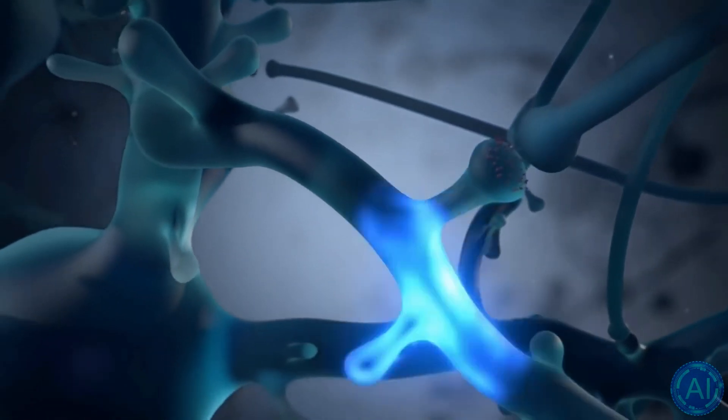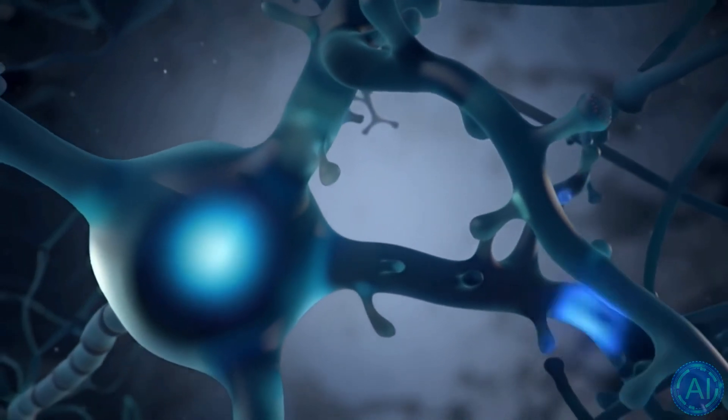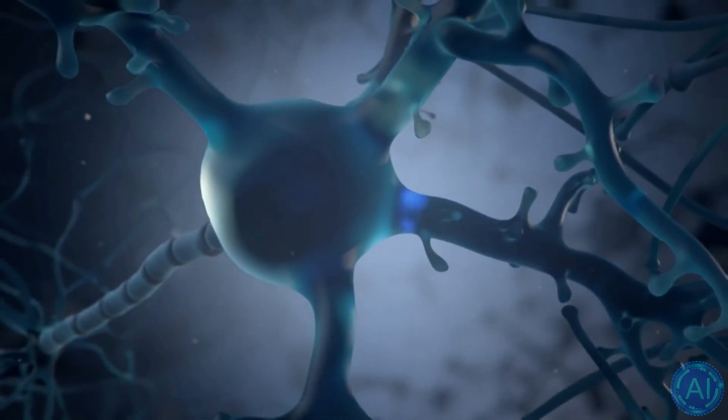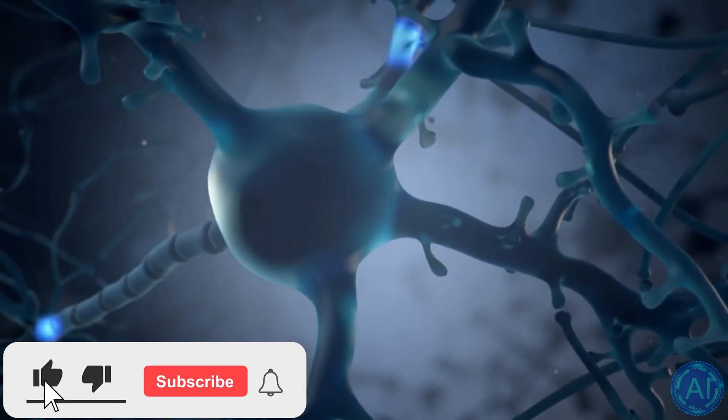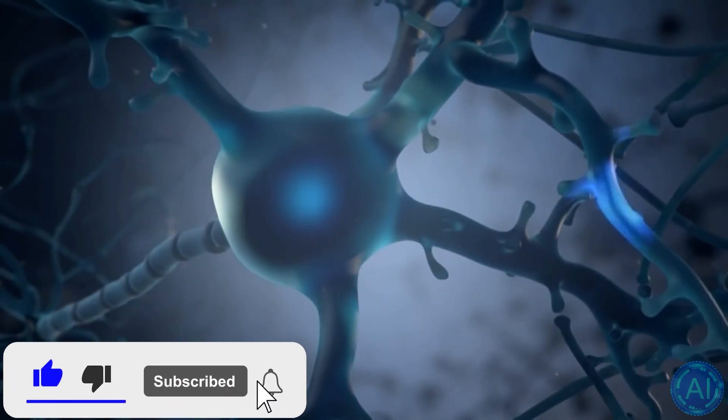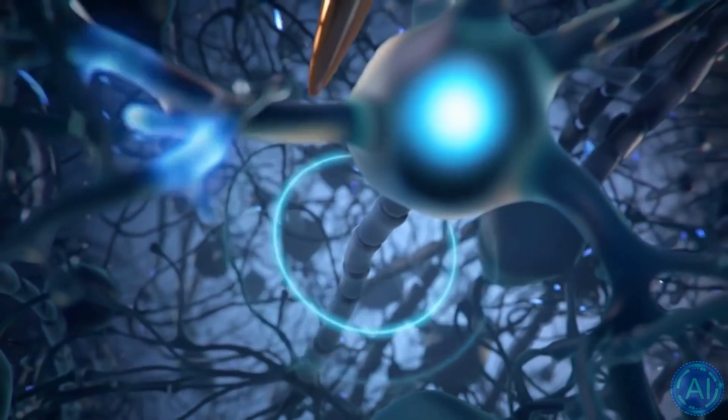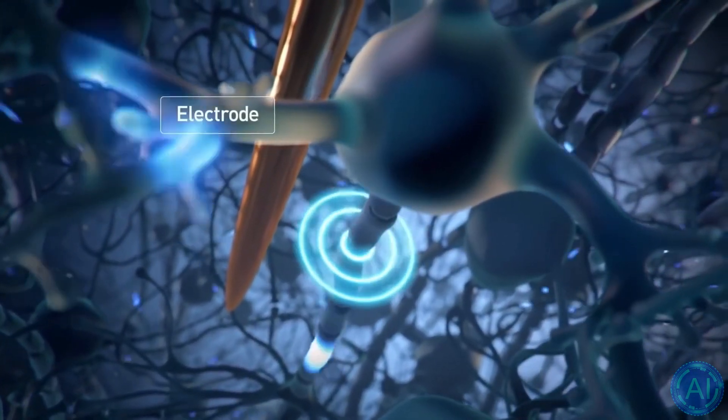Google made news last year when they similarly mapped a piece of a fruit fly brain. That map, which was the biggest at the time, covered around 25,000 neurons and 20 million synapses. The new map covers tens of thousands of neurons and 130 million synapses, in addition to addressing the human brain, which is noteworthy.